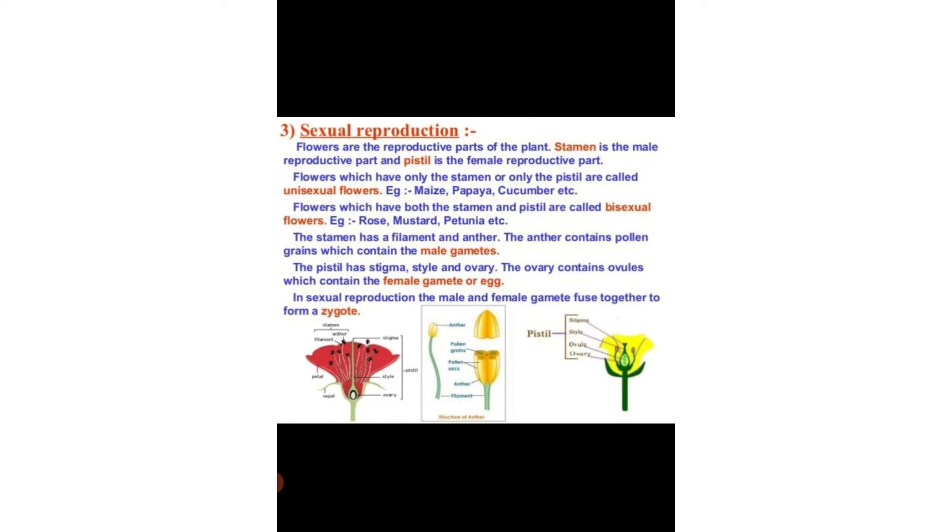Flowers which have only stamen or only pistil are called unisexual flowers, for example maize, papaya, cucumber, etc. Flowers which have both the stamen and pistil are called bisexual flowers, for example rose, mustard, petunia, etc.